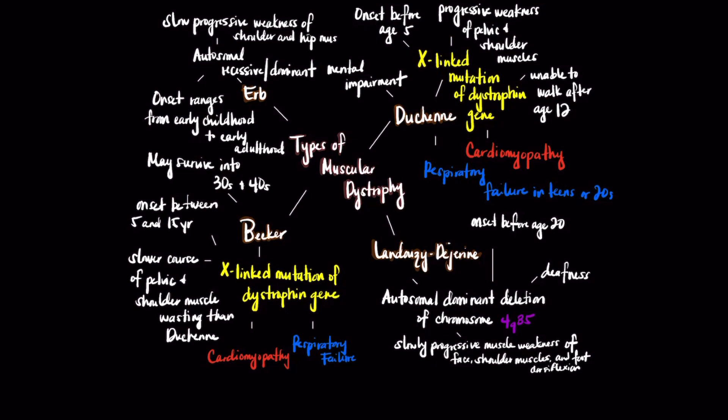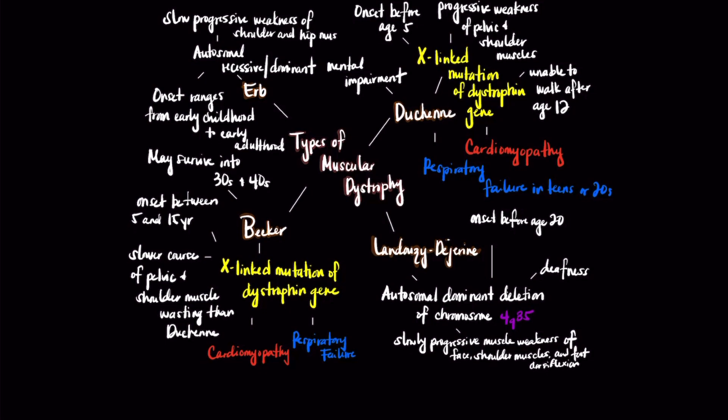Both Duchenne and Becker lead to cardiomyopathy and respiratory failure, as highlighted in red and blue respectively. Duchenne has a more relatively faster progression than Becker's, as the onset for Duchenne is before age 5, whereas Becker's starts between 5 and 15 years old. In Landauzy-Dejerine, the genetic basis involves the deletion of chromosome 4Q35 and involves progressive weakness of the face, shoulder, and foot, and also results in deafness.